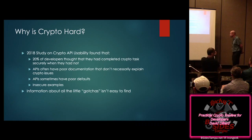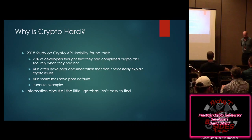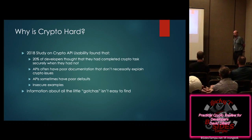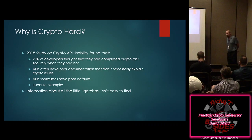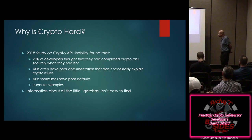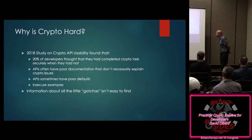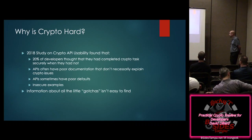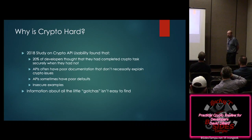So why is crypto hard? There's a 2018 study on crypto API usability. It found that 20% of developers thought they had completed a task securely when they hadn't — and these were simple tasks. What they found was that bad documentation leads to insecure implementations. There are also lots of subtle gotchas that you don't see in the documentation.